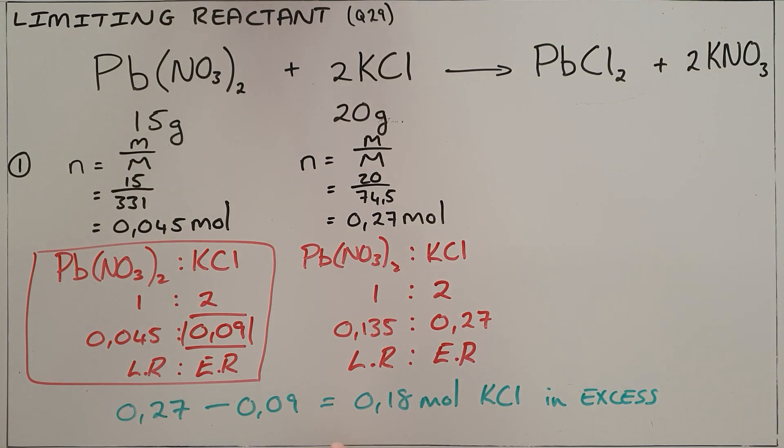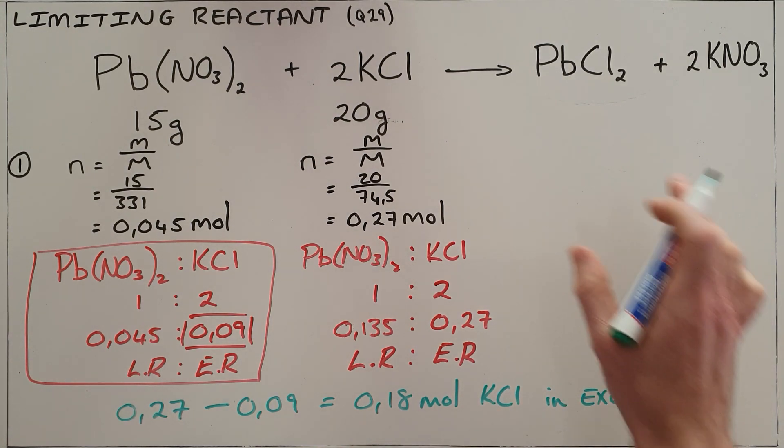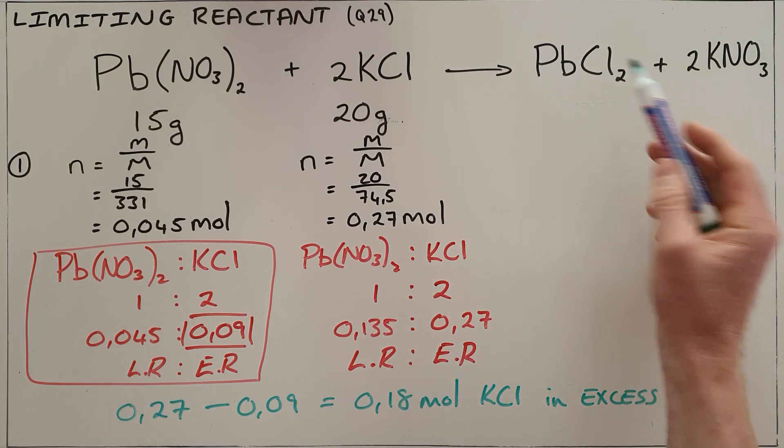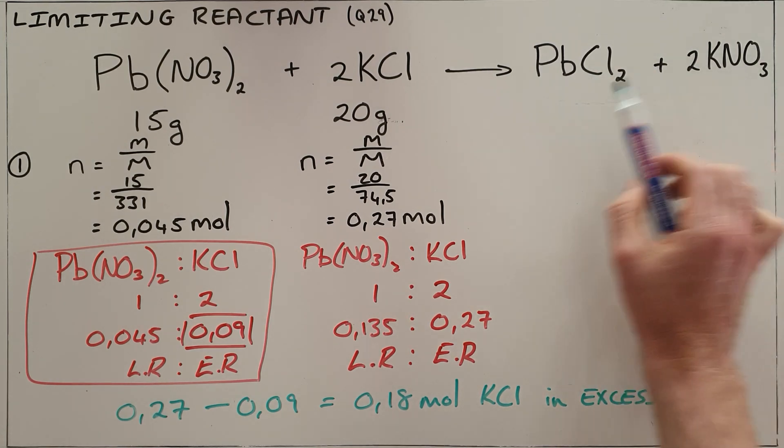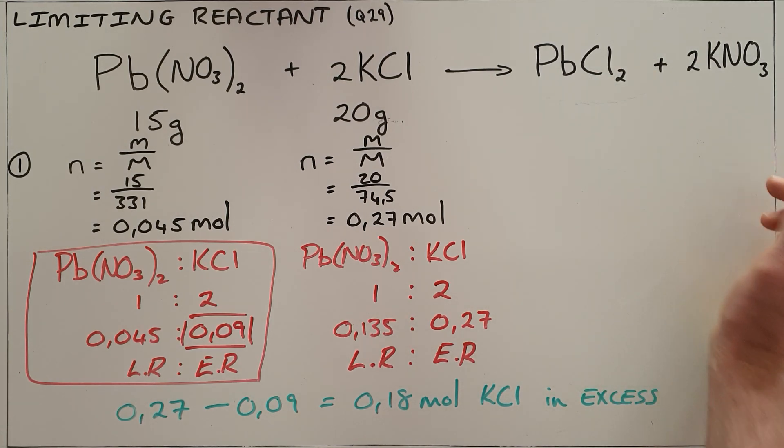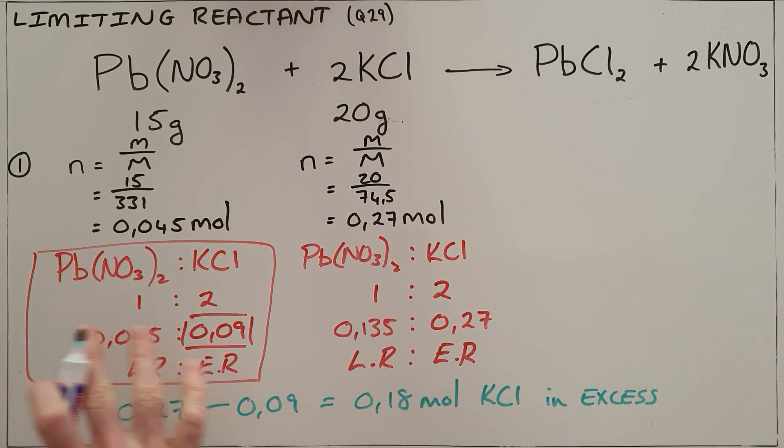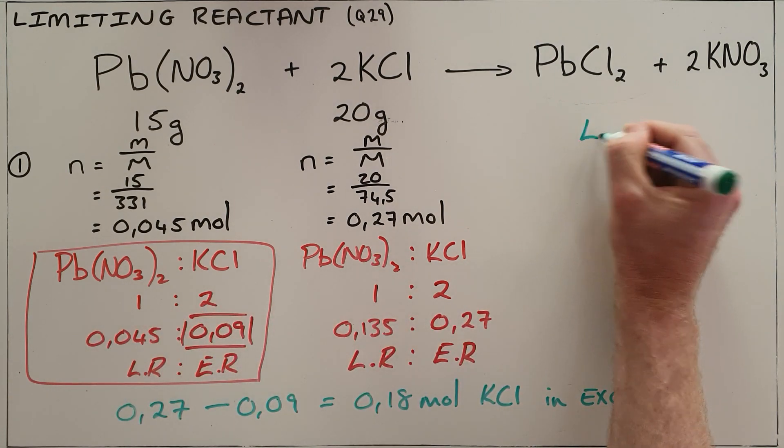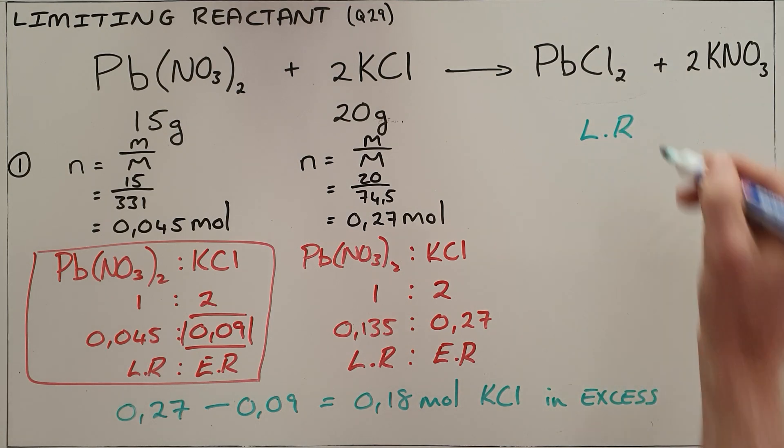Questions like this can normally continue. Common ways in which they do is they would ask what quantity of one of the products would be formed, in which case the only trick here is to remember that you always use your limiting reactant for whatever you've been asked for, so in this case, lead chloride.